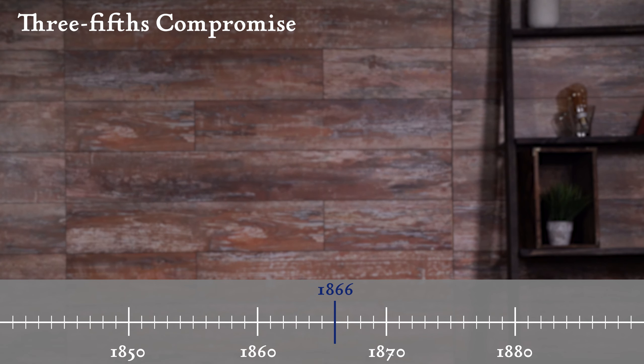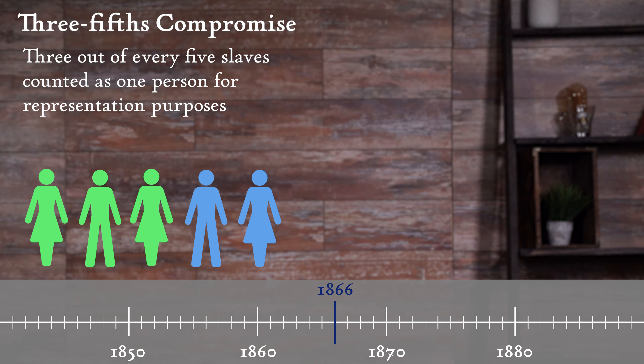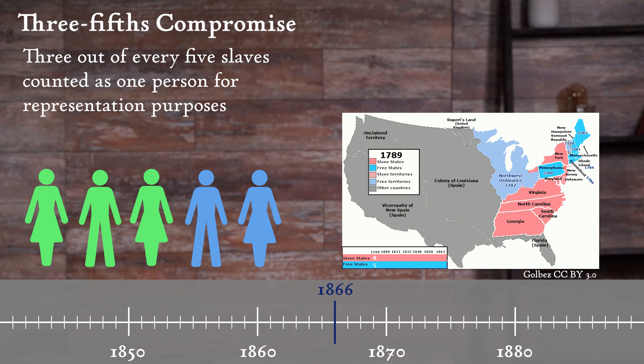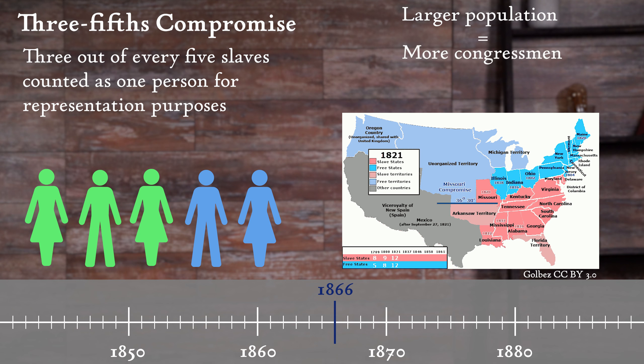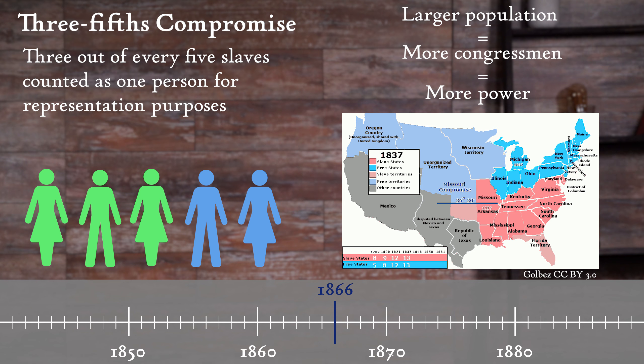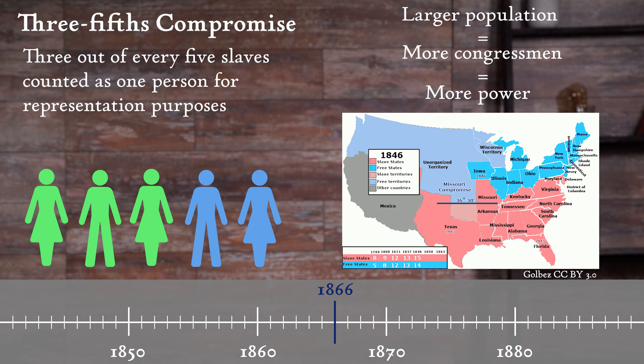Not only had the Southern workforce changed radically, but there was conflict and disagreement over how to incorporate newly freed Blacks into the political arena and how, or if, to reincorporate former Confederates. Remember that this was a period of time when America was still a constitutional republic and less of a direct democracy. The Three-Fifths Compromise of the 1787 Constitutional Convention meant that three out of every five slaves were to be counted for representation purposes — essentially, every slave was considered 60% of a person.